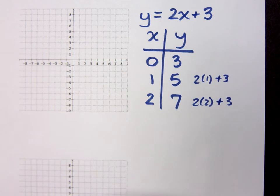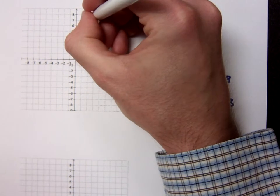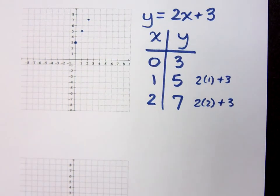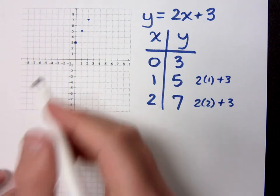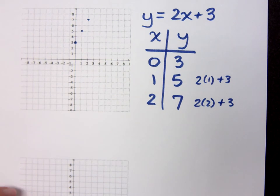So let's see, 0, 3 is right there. 1, 5 is right here, and then 2, 7 is right here. Do you think it's going to continue on in that same pattern all the way across? Yes. And if you're not sure, you can pick other values like negative 1 and negative 2. But you will see that it all matches up.